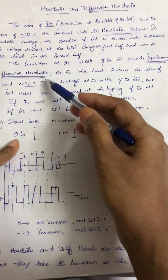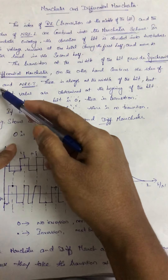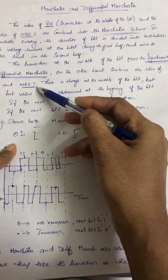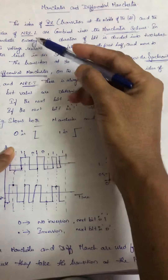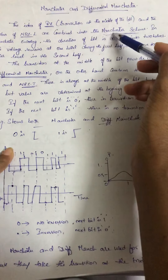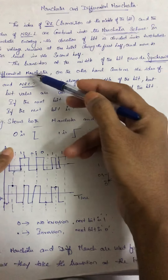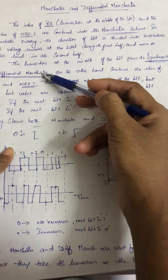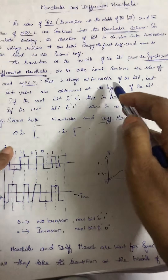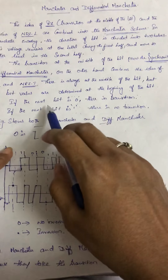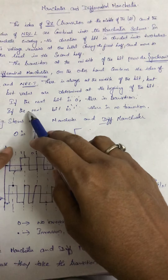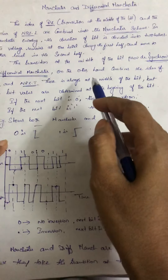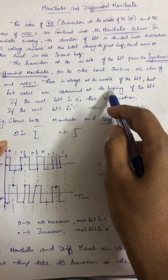Coming to Differential Manchester — it is the combination of RZ and NRZ inversion. What is NRZ inversion? The change or lack of change determines the bit values. NRZ level is used in Manchester scheme, and NRZ inversion is used in Differential Manchester. In Differential Manchester, there is always a transition at the middle of the bit, but the bit values are determined at the beginning itself — whether it is 0 or 1.